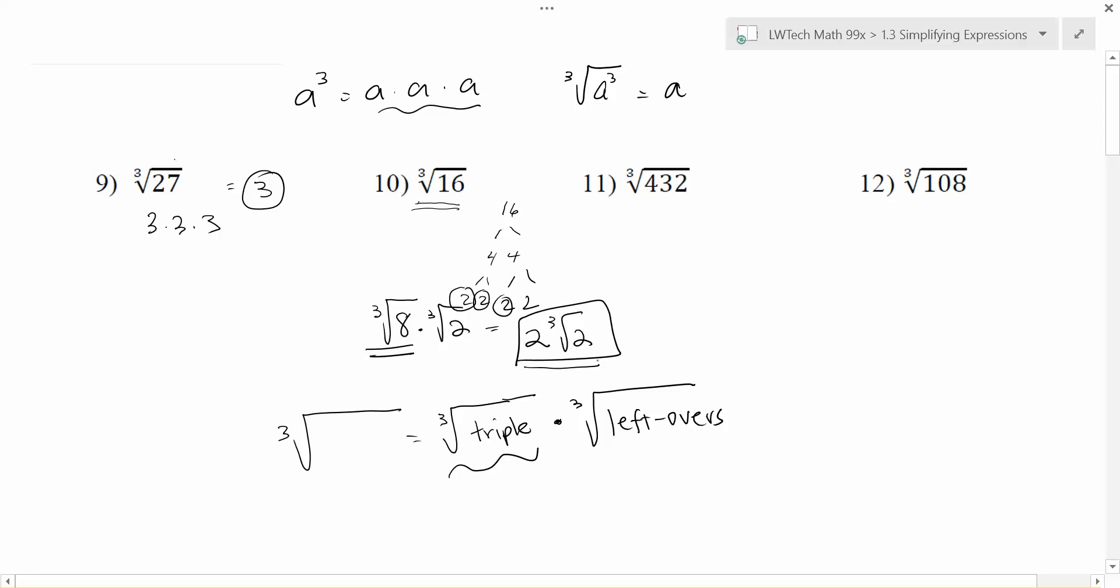This will work with really big values. It doesn't matter. All that we want to do every time is start with our number, find its prime factors, and then see if there's any triplets when we're looking for cube roots. In this particular example, notice it ends in a 2.